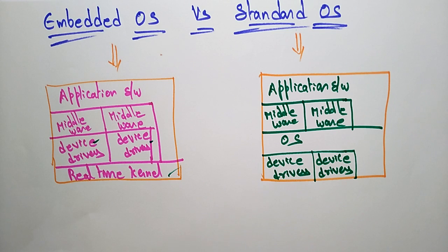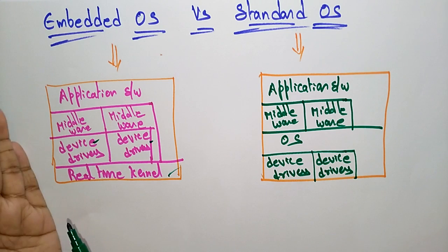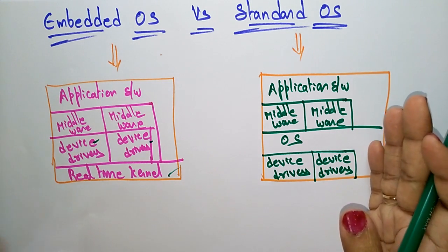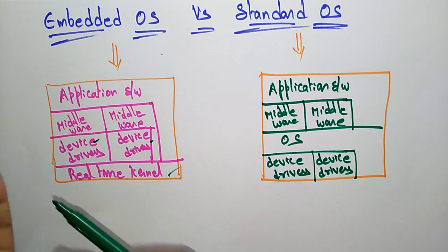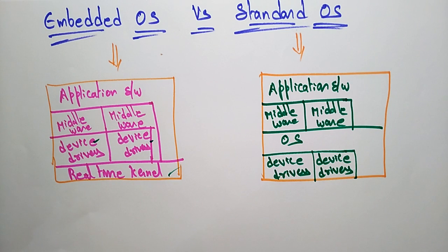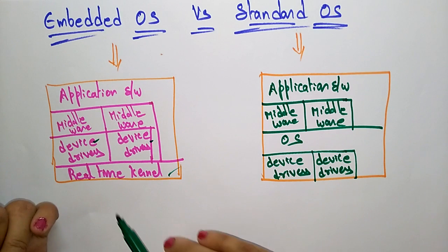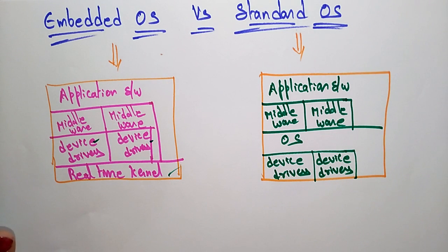Whenever you are asked about this difference, just explain: an embedded operating system has a real-time kernel, whereas a standard operating system does not require one. In the embedded operating system, device drivers may vary depending on the device you would like to use, and based on your system configuration you can choose different device drivers. Thank you.